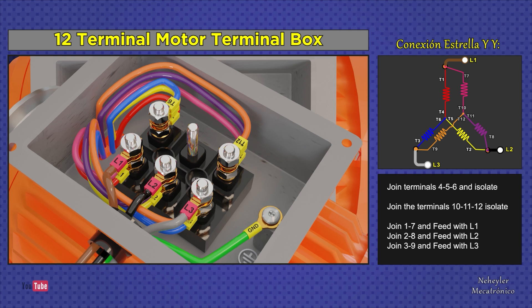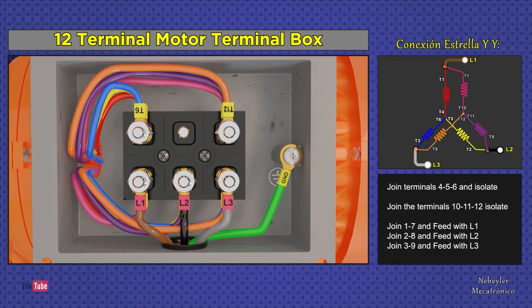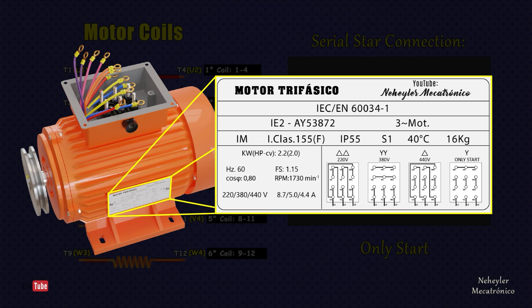We must fix or adjust the terminals to the terminal base using nuts to prevent them from moving and causing a short circuit. We already saw the double Y connection where, according to the specifications of this motor, it must be used for a voltage of 380V.